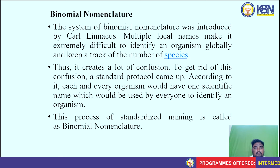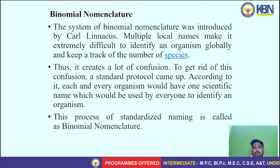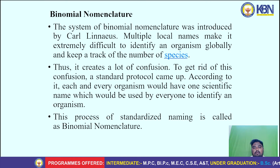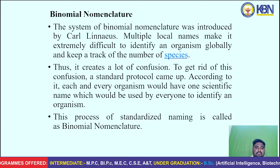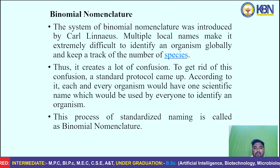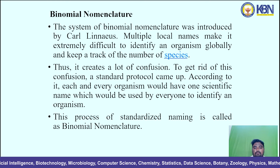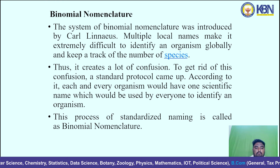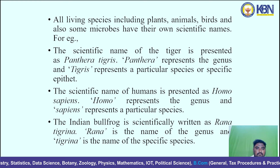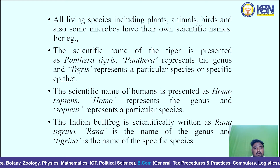The system of binomial nomenclature was introduced by Carolus Linnaeus. Multiple local names make it extremely difficult to identify organisms globally and track the number of species, creating a lot of confusion. To resolve this, a standard protocol was established where each organism has one scientific name used by everyone. This process of standardized naming is called binomial nomenclature. All living species — including plants, animals, birds and some microbes — have their own scientific names.